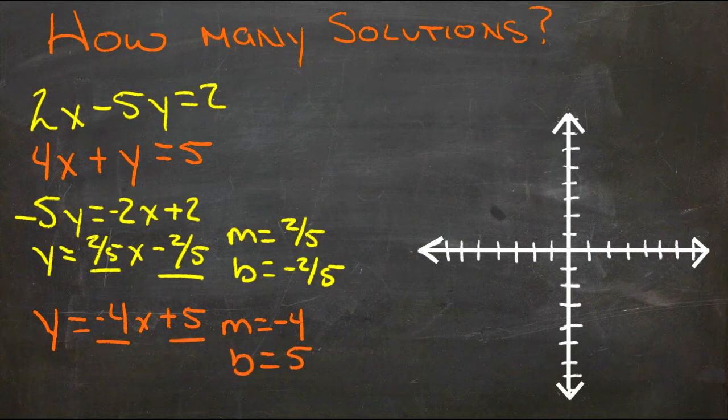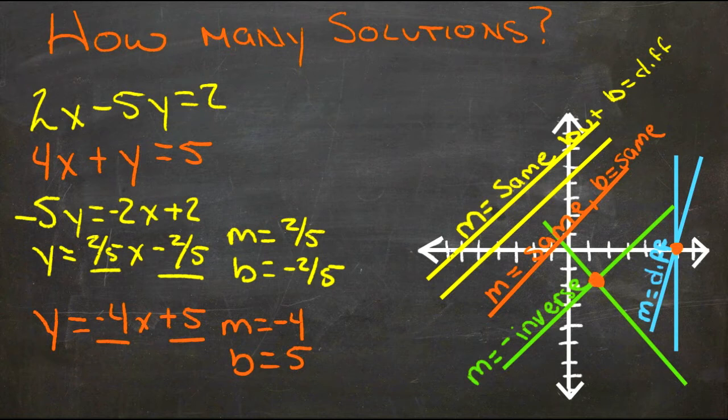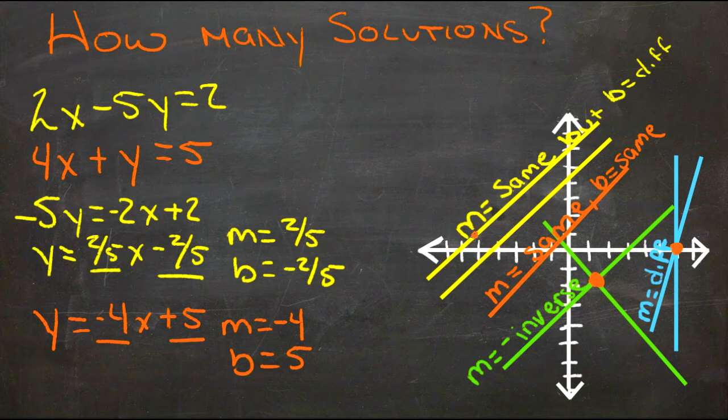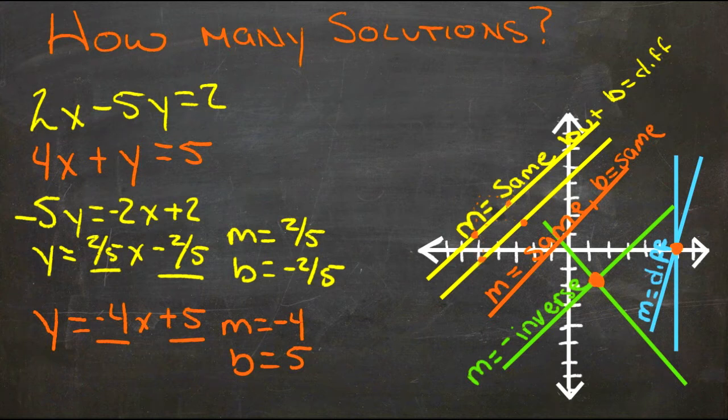Now if we take a look at this other information on the graph, we can see some different cases. If our two lines were parallel, like they are here in yellow, then the slopes would be the same, because as each one rises and runs to get from point to point, the other does exactly the same thing. That would mean there wouldn't be any solutions, because there wouldn't be any places where the two lines actually crossed.